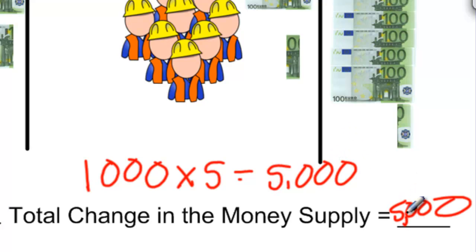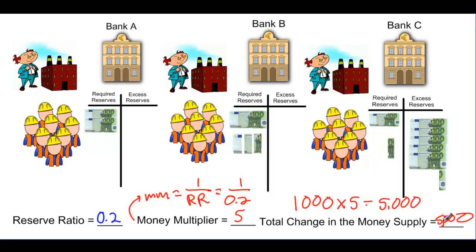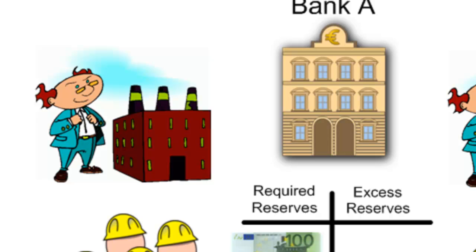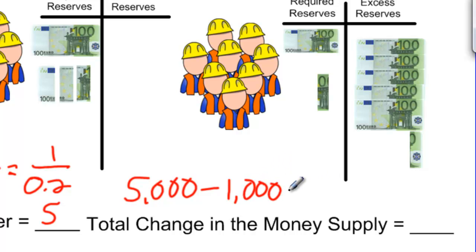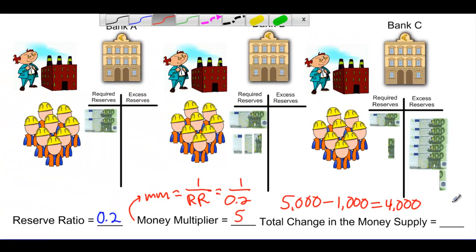However, this is a little misleading. One assumption we made is that the initial change in checkable deposits — the 1,000 euro change in the bank's reserves — was not already part of the nation's money supply. In fact, if we take into account that the original entrepreneur's money used to pay for manufacturing and workers was already part of the money supply, then the actual change in the money supply will be 5,000 euros minus the original 1,000 euros. We have to subtract out the initial deposit of 1,000 euros because it was probably already part of the nation's money supply.